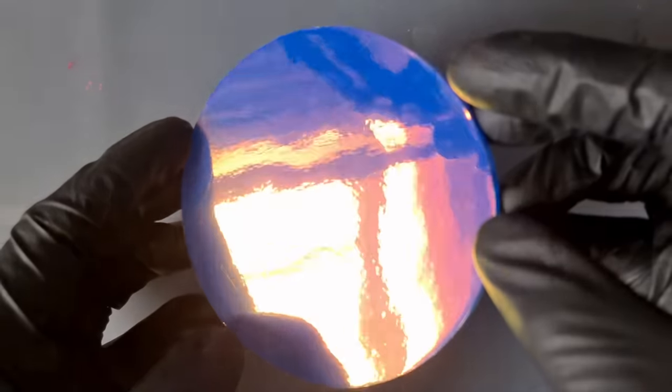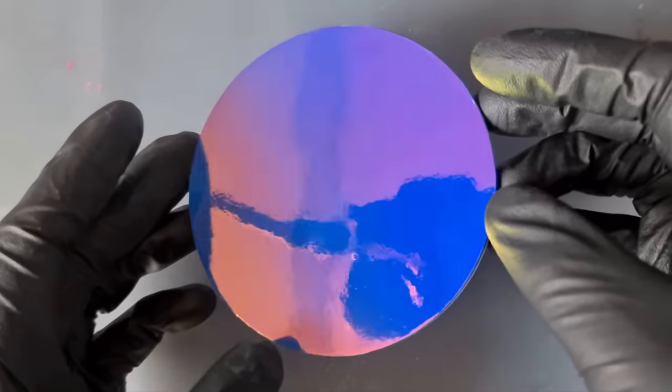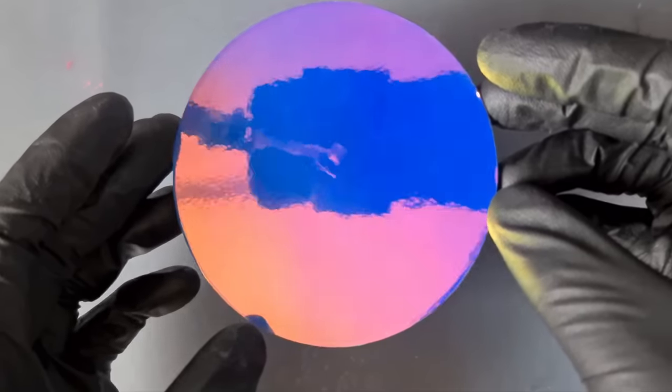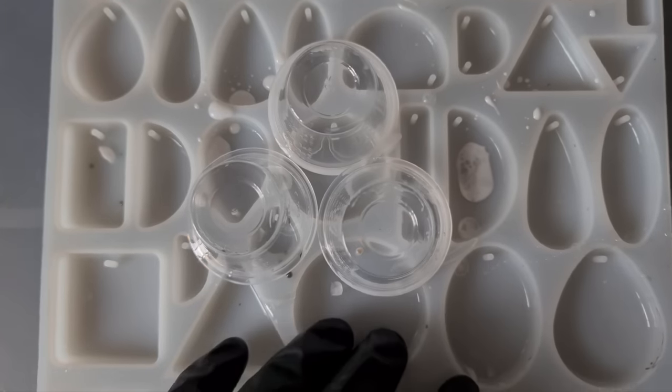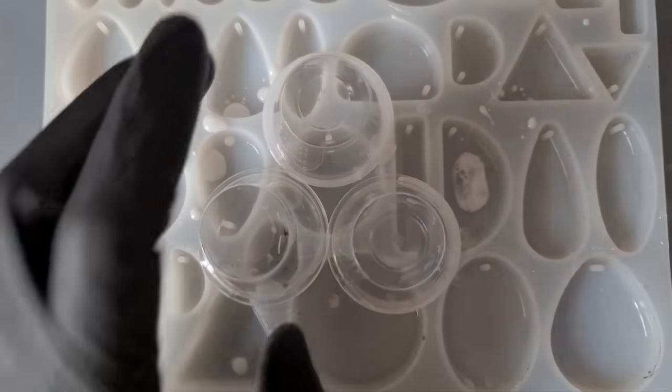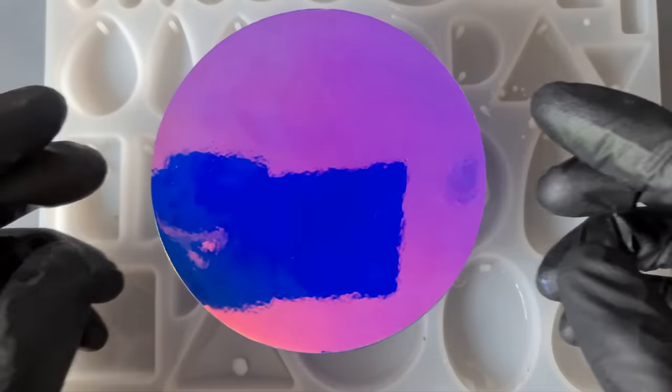If you've got any sticky outy bits, use a really sharp craft knife and just carefully run that around and just take off any excess. Also just bear in mind that the vinyl that I'm using is quite transparent, it's not really showing through on this one, but just be careful because you don't want it showing through too much.